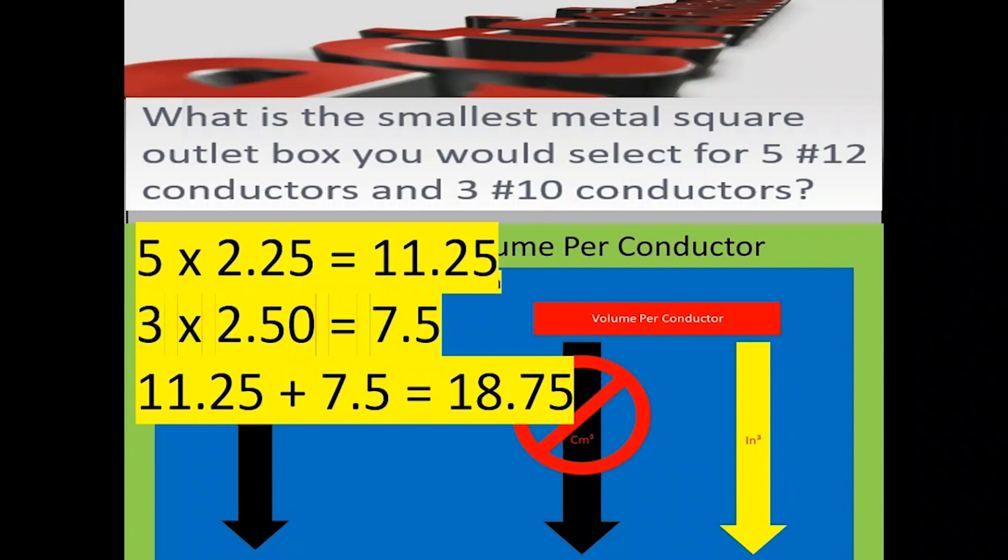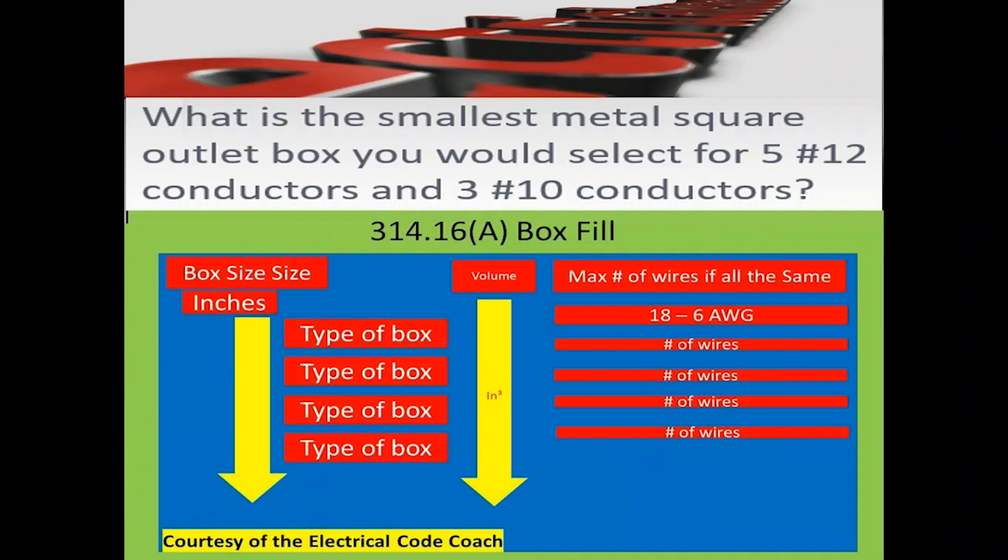So now we're going to head to table 314.16a and the first thing we're going to do is find our type of box. So our type of box is right here. Then we're going to come over to this middle column, the volume column, and we're going to go down and find a square box that just fits the conductors. And in this case, it's a four by one and a half. Great job.